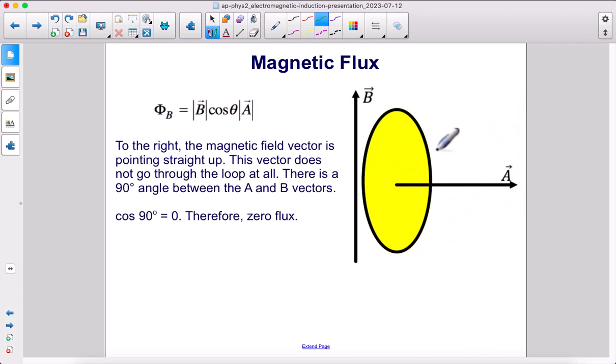To the right, the magnetic field vector is pointing straight up. This vector does not go through the loop at all. There's a 90 degree angle between the field, the magnetic field, and the area vector. Cosine of 90 is 0. Therefore, 0 flux.